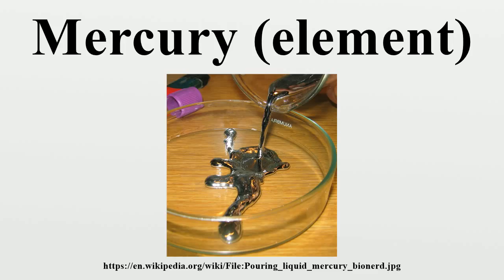The red pigment vermilion is obtained by grinding natural cinnabar or synthetic mercuric sulfide. Mercury is used in thermometers, barometers, manometers, sphygmomanometers, float valves, mercury switches, mercury relays, fluorescent lamps and other devices.